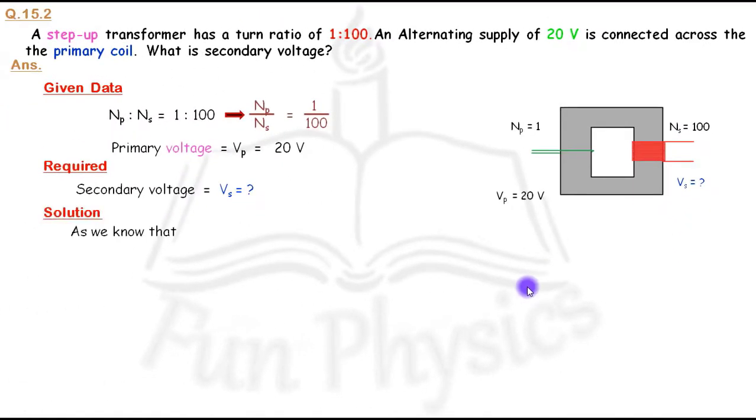For the solution, we know that Vs over Vp equals Ns over Np. We have to find Vs, so we can rearrange this equation as Vs equals Ns multiplied by Vp over Np.